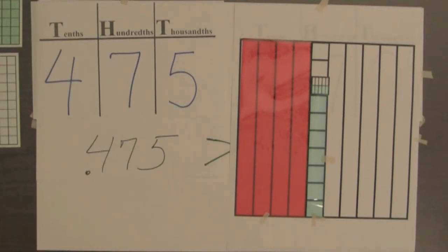So to compare two decimals, we first look at the tenths digits in each decimal, because this is the number of the biggest parts. Then we compare the hundredths digits in the two decimals and the thousandths digits.